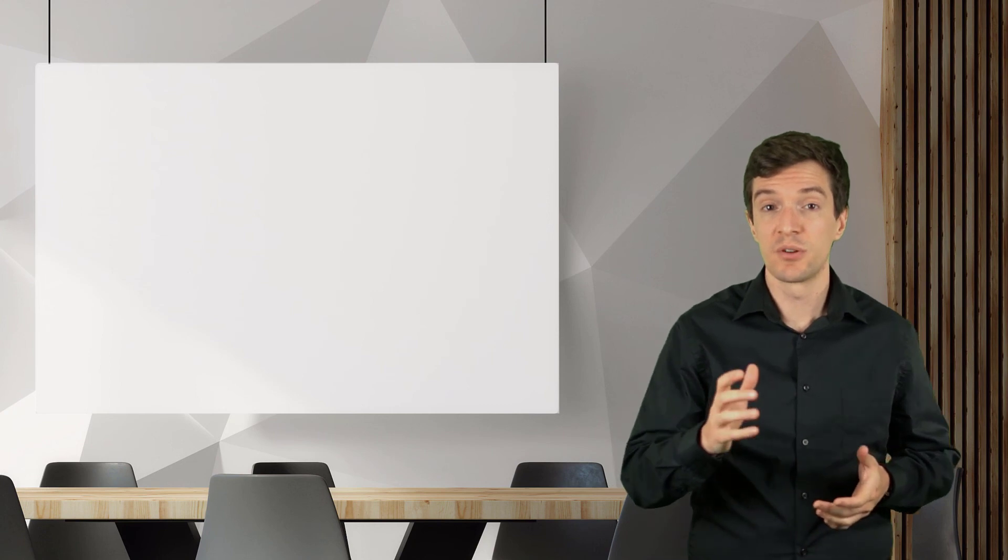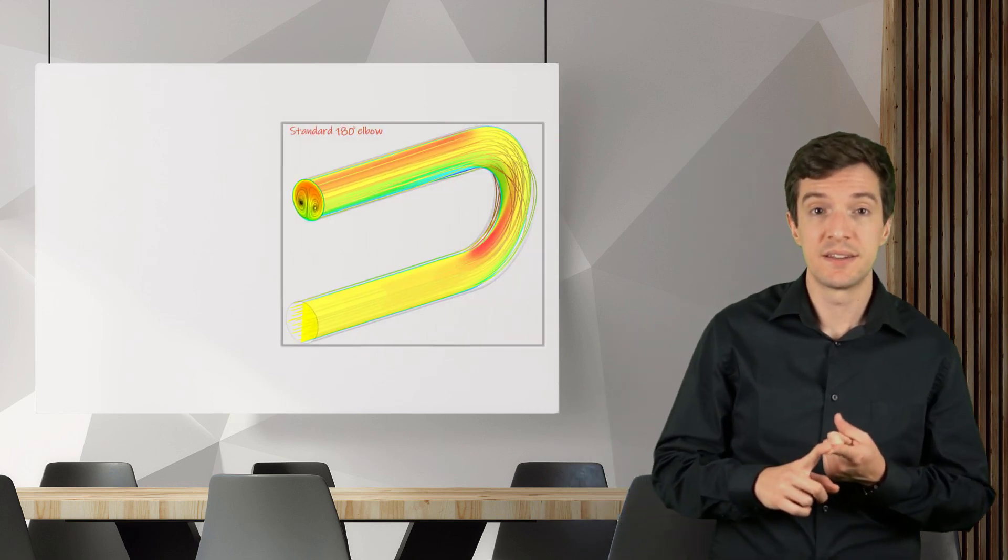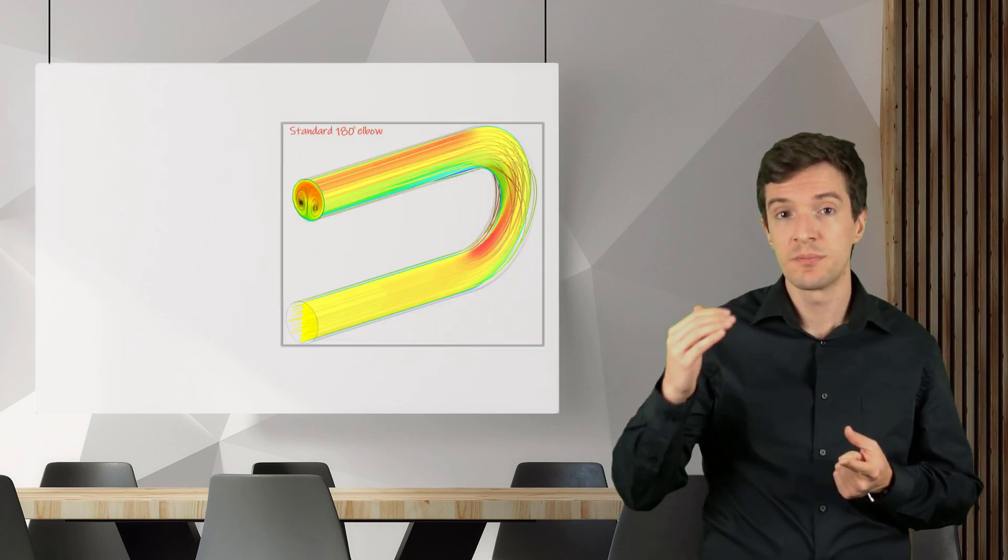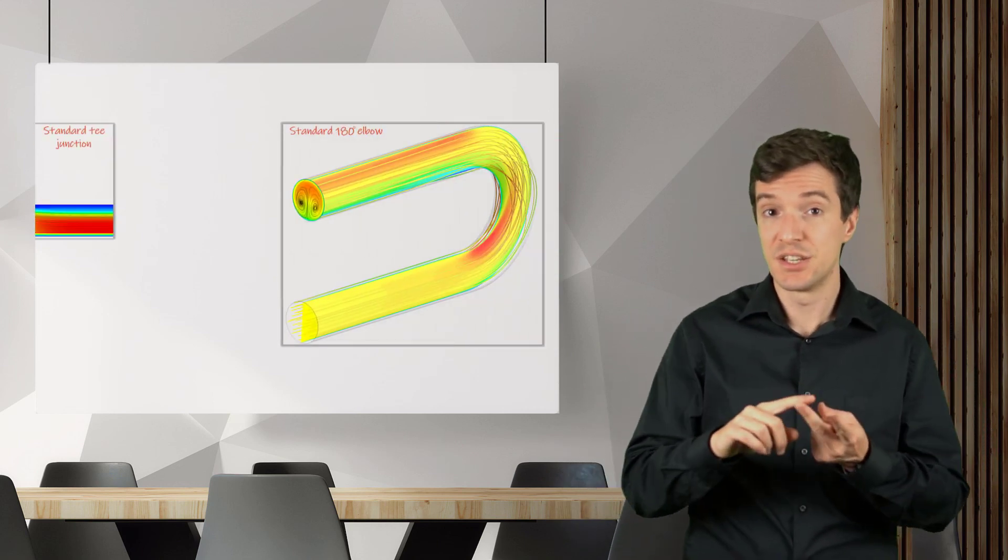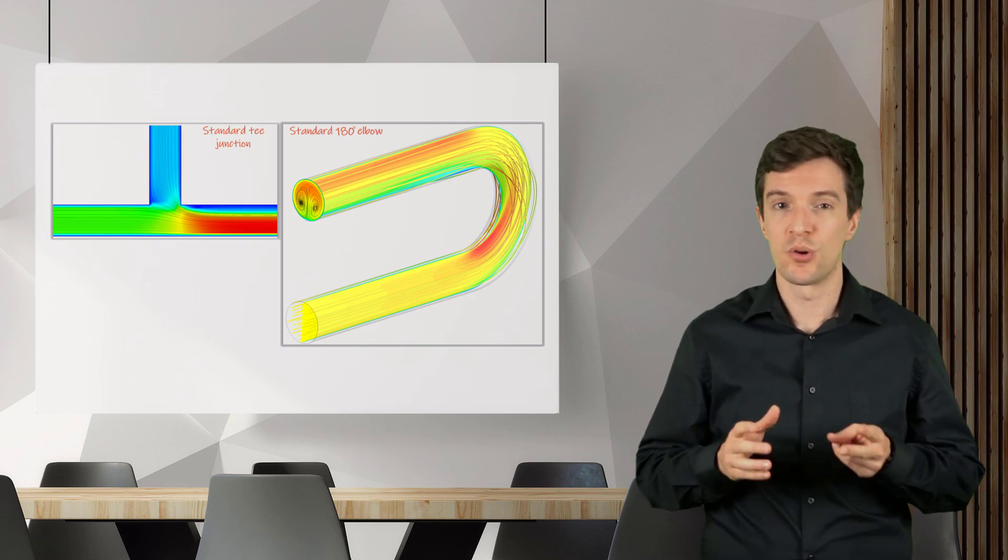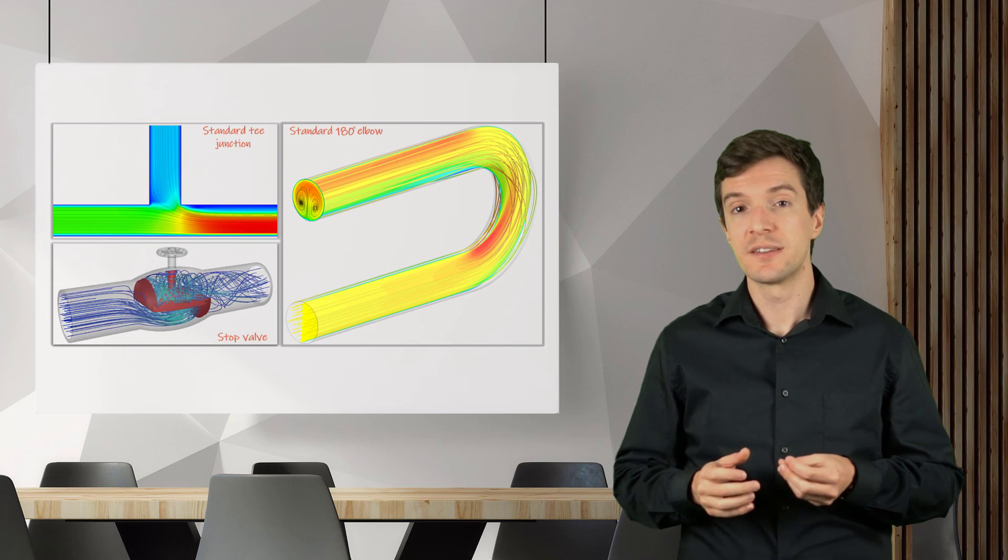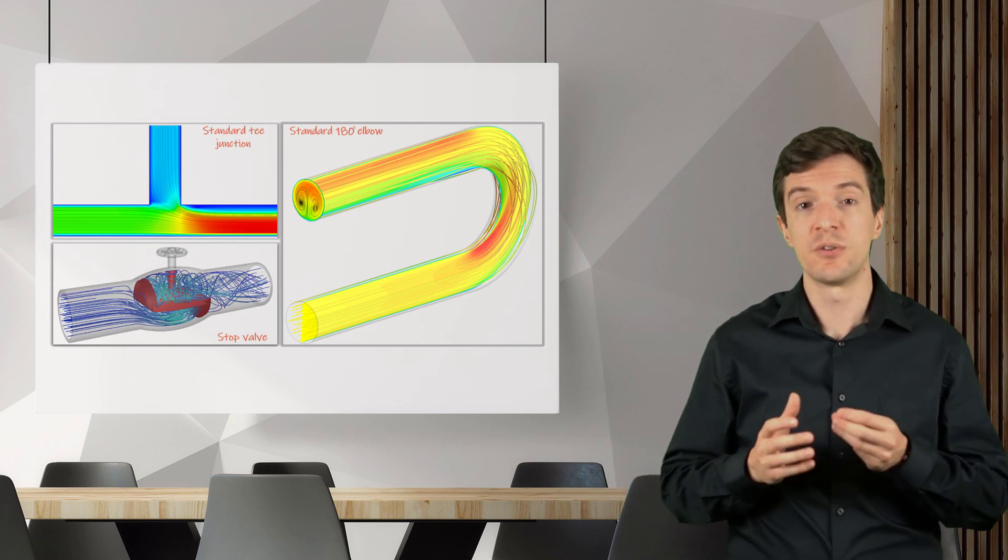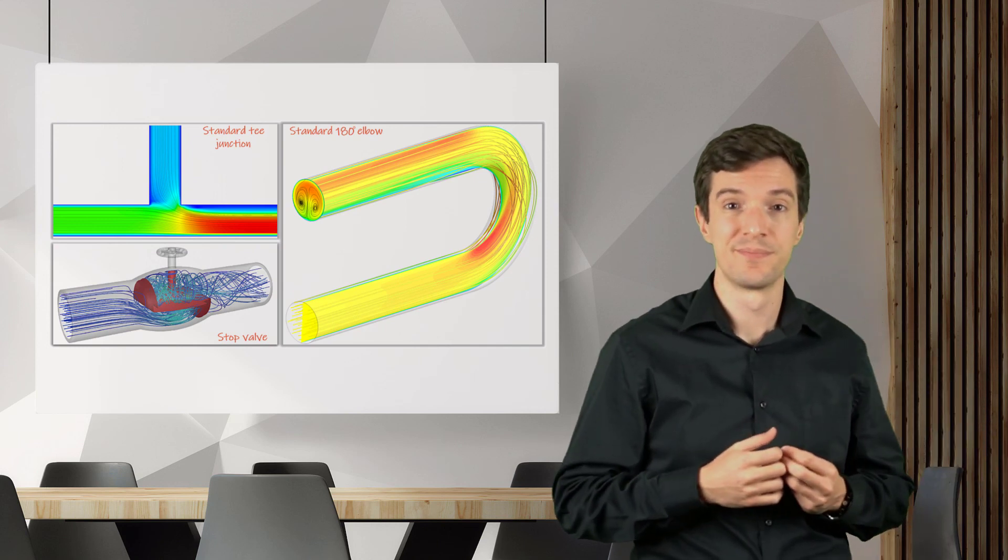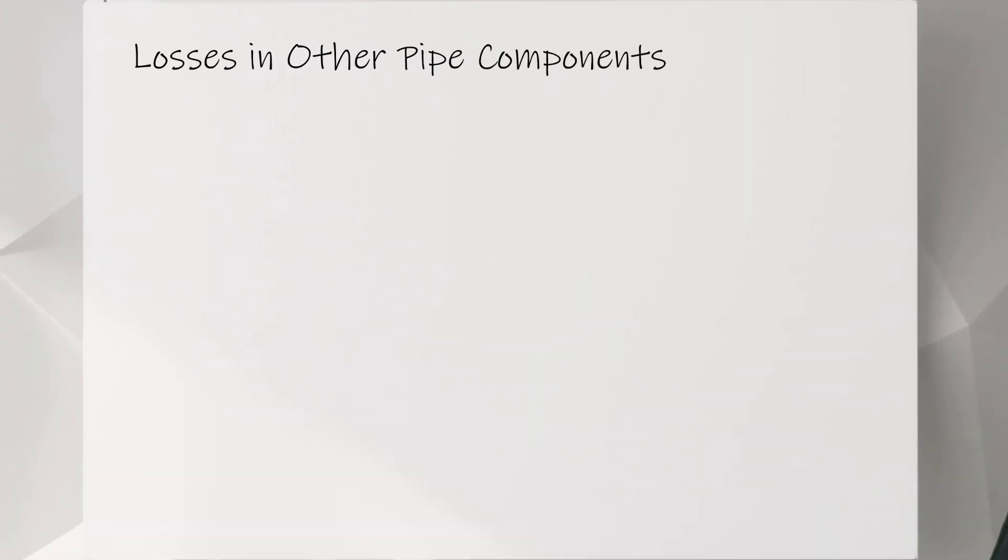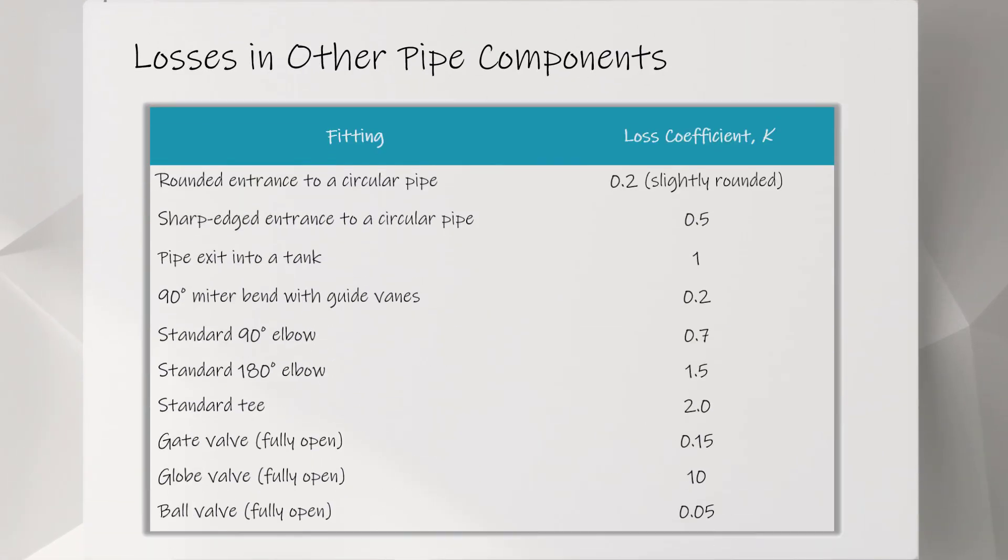Other common components that can be found in pipe networks are 180 degrees elbows to turn backward the flow, T junctions to split or mix flow streams, and valves to regulate and control the flow rate through the pipes. Here in this table, I reported different common components and their relative friction factor.